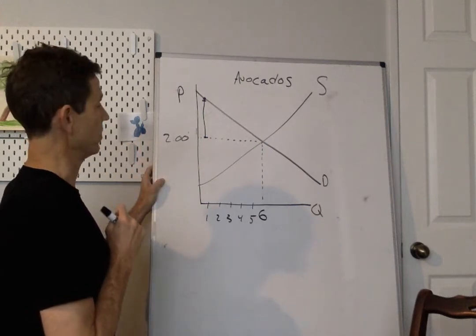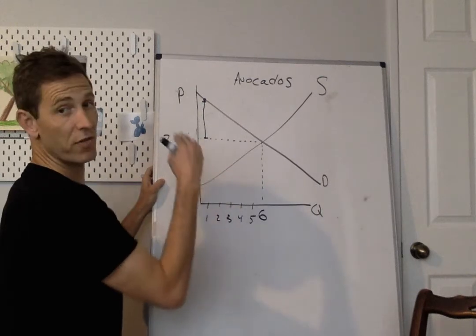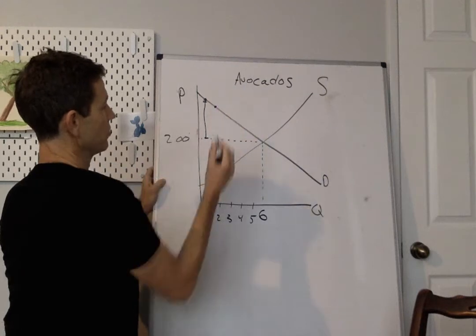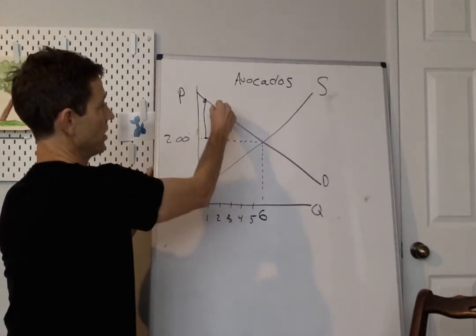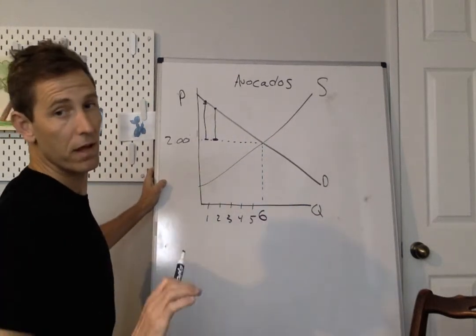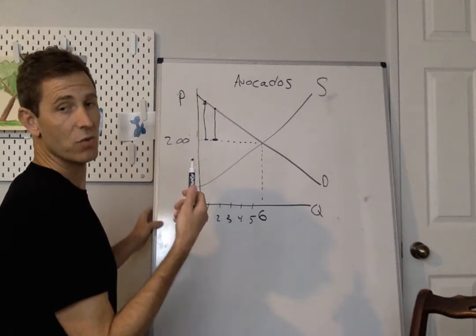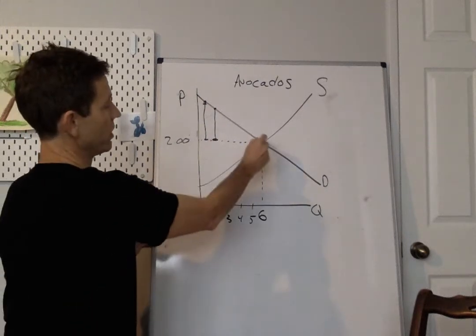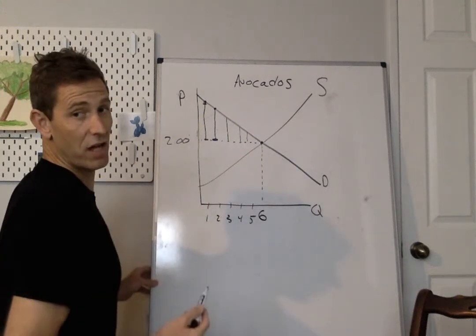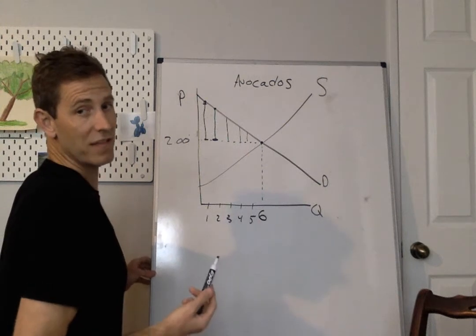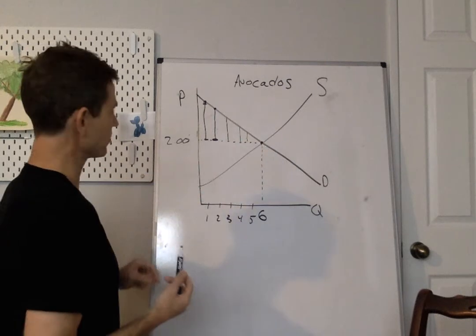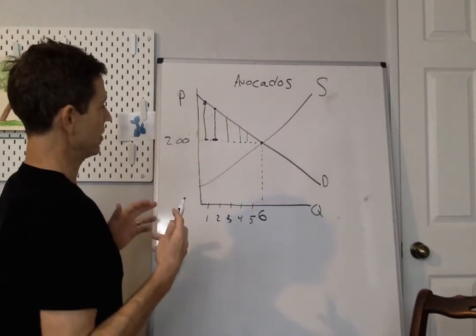What about for the second one? Well, the second one, there's a consumer out there willing to pay a price that's not quite as high as we saw for the first one, but it's still much higher than the two bucks. So you're gonna get consumer surplus of that height for the second avocado. And so the pattern then is going to follow all the way out here, the third, the fourth, the fifth, all the way until we get to the sixth avocado, where there's no consumer surplus for that sixth one. Somebody pays two bucks, the buyer's willing to pay two bucks.